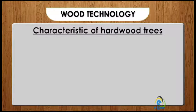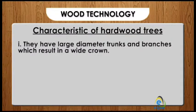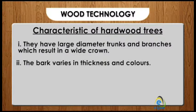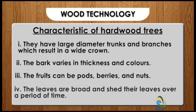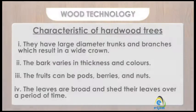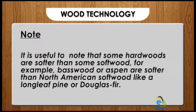Let us now look at some characteristics of hardwood trees. One: they have large diameter trunks and branches which result in a wide crown. Two: the bark varies in thickness and color. Three: the fruits can be pods, berries, and nuts. Four: the leaves are broad and shed over a period of time. It is useful to note that some hardwoods are softer than some softwoods — for example, basswood or aspen are softer than North American softwood like long leaf pine or Douglas fir.